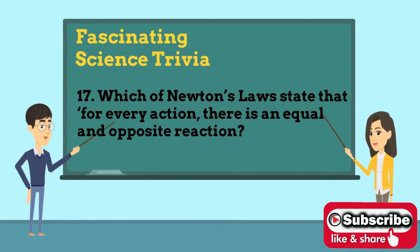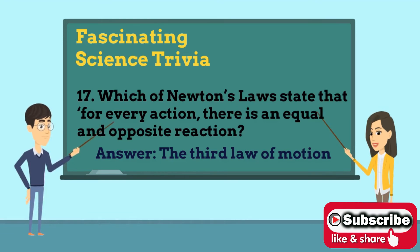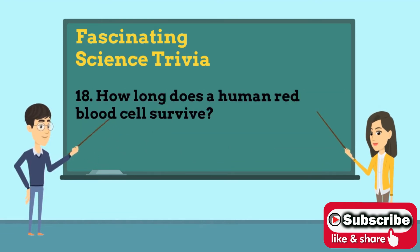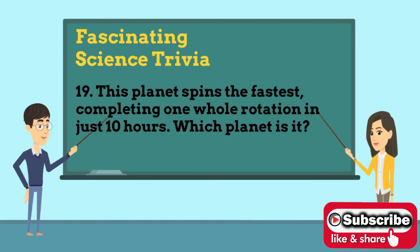that for every action there is an equal and opposite reaction? Answer is the third law of motion. Number 18: How long does a human red blood cell survive? Answer is 120 days. Number 19: This planet spins the fastest,